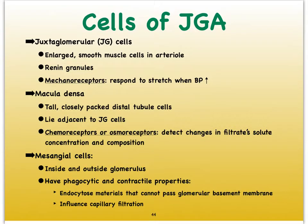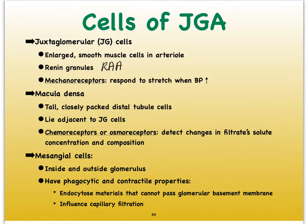There are three cell types in the juxtaglomerular apparatus. The first cell type is called the juxtaglomerular cell. These cells are found in the arteriole wall because they're smooth muscle cells, primarily in the afferent arteriole. They're easy to pick out because they contain little granules that contain renin — this is the histological area where renin is secreted to kick in the renin-angiotensin mechanism. These cells can also function as mechanoreceptors and detect whether or not the arteriole wall is being stretched.